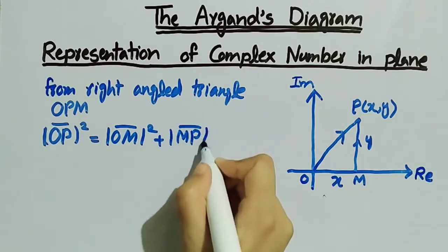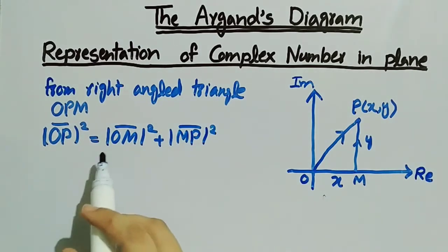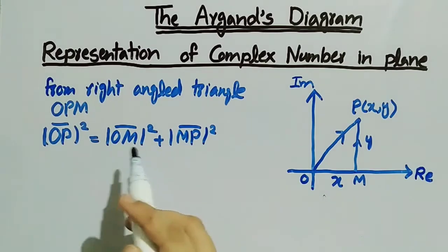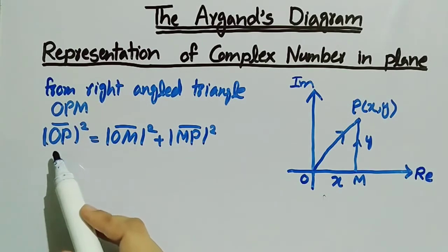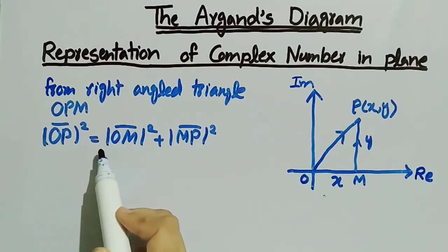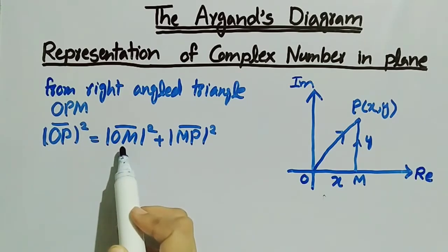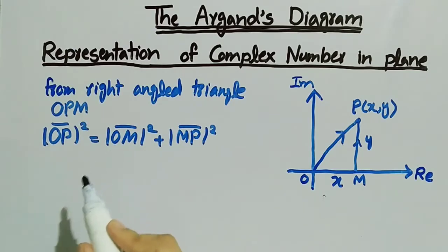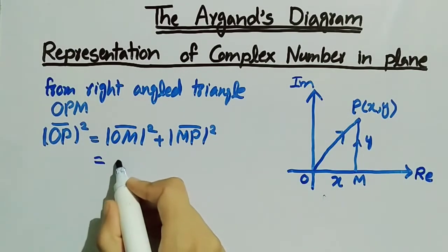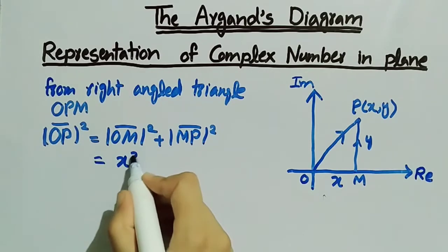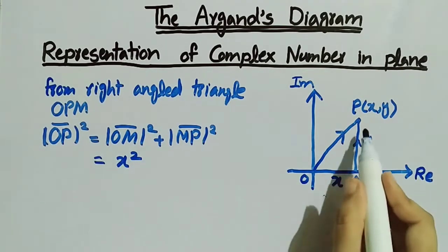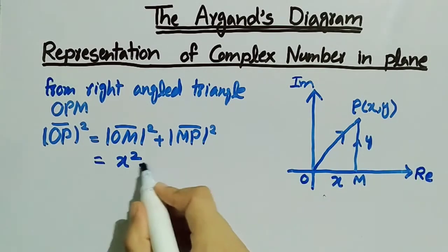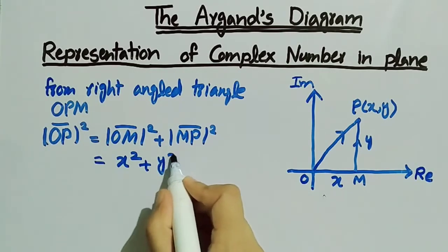We have written this from Pythagoras theorem, which states that the square of the hypotenuse is equal to perpendicular square plus base square. This equals x² + y², where OM = x and MP = y.